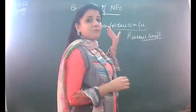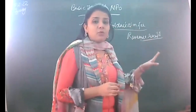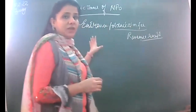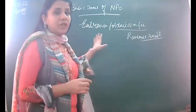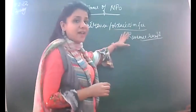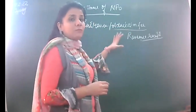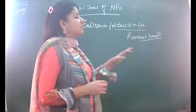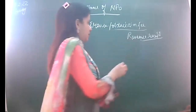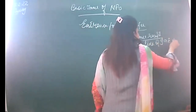Don't confuse entrance fee with life membership fee. Life membership fee is always to be added to the capital fund because that is a fee received from members only once throughout their life. Entrance fee or admission fee is paid when a new member joins the NPO for the first time. This is to be treated as a revenue receipt.